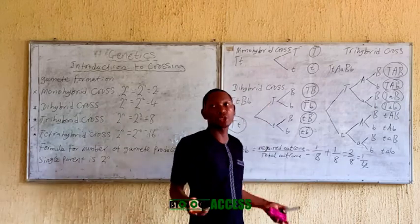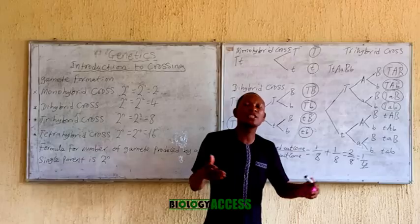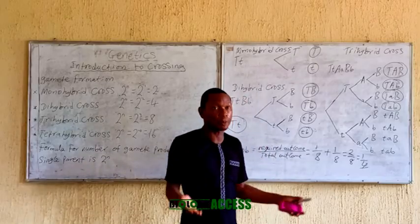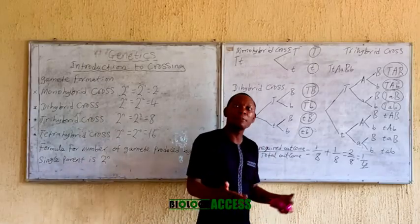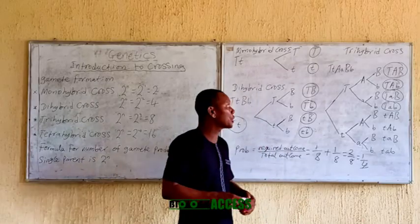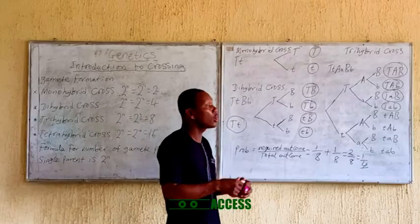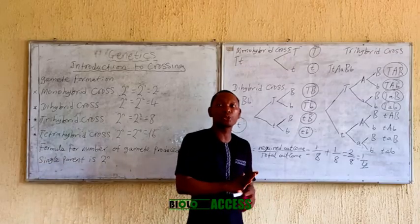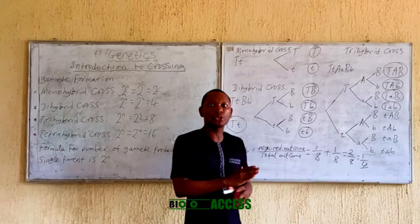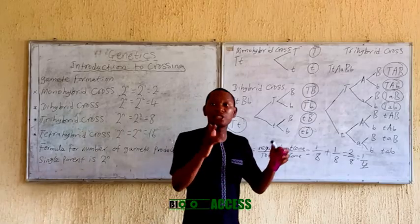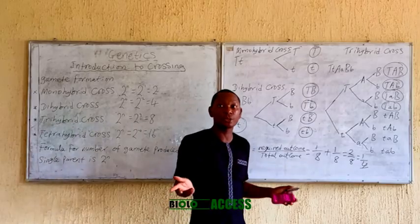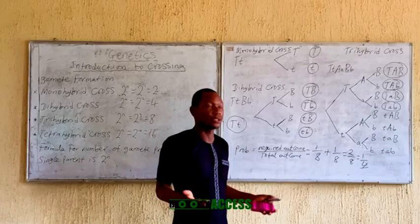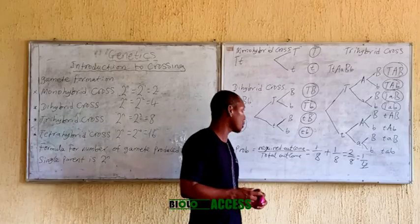If you have any question, you can drop it in the comment section. If there is any area that needs explanation, drop it in the comment section and I will refer to that. In my next video, I'll be talking about how to carry out crosses in monohybrid using a Punnett square, dihybrid using a Punnett square or the forked-line method, either of which can be used, as well as trihybrid cross.